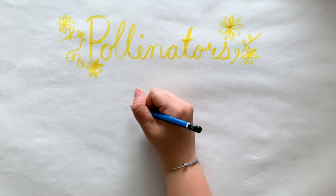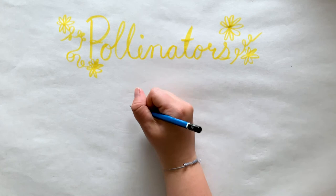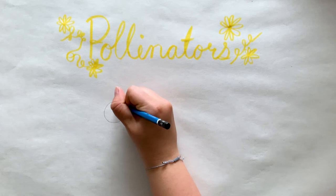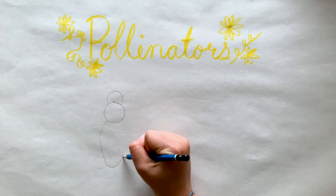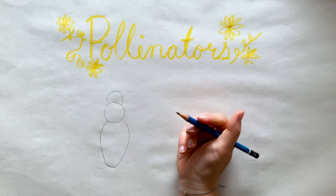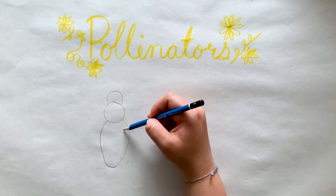First, we're going to start by drawing a circle. Next, you're going to draw a half circle on top of that circle. And then you're going to draw this big oval shape. So this is the head, the body, and the body.